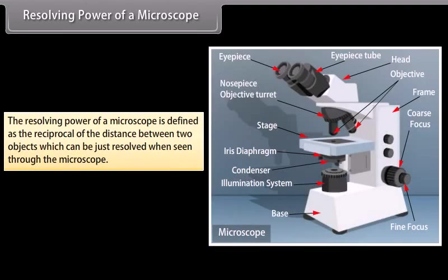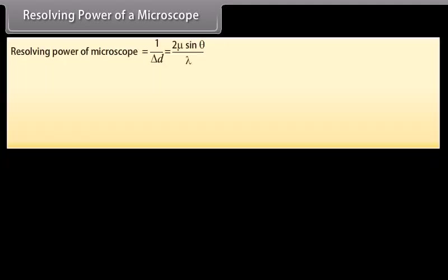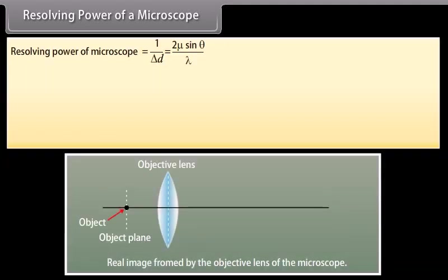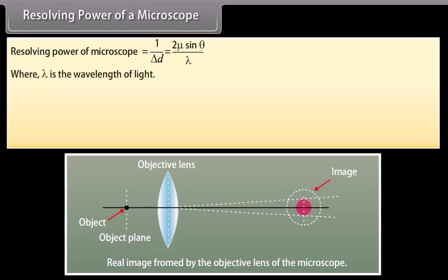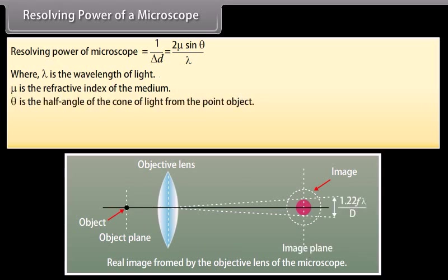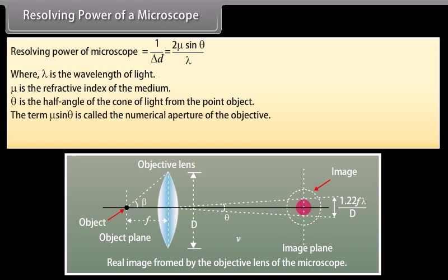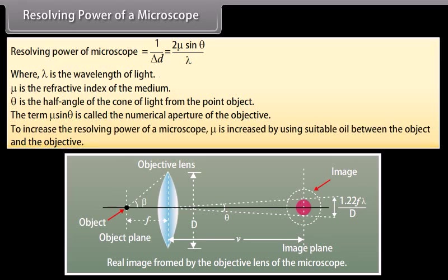The resolving power of a microscope is defined as the reciprocal of the distance between two objects which can be just resolved when seen through the microscope: 1/Δd = 2μ sin θ / λ, where λ is the wavelength of light, μ is the refractive index of the medium, and θ is the half angle of the cone of light from the point object. The term μ sin θ is called the numerical aperture of the objective. To increase the resolving power of a microscope, μ is increased by using suitable oil between the object and the objective.